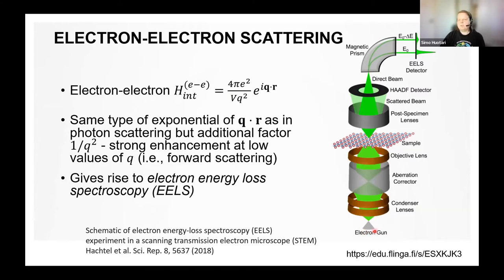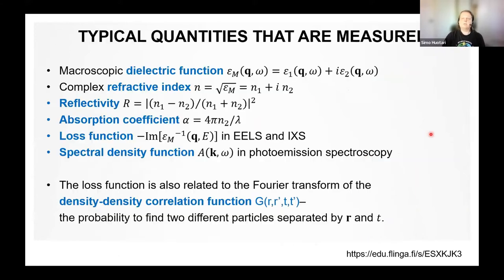In an electron energy loss spectrometer, you have an electron gun, electron optics using electromagnetic and electric field optics, then a sample in transmission, and you measure the energy of the outgoing electrons, which interact with the sample and create excitations causing energy losses. This can be combined with, for example, a scanning transmission electron microscope.